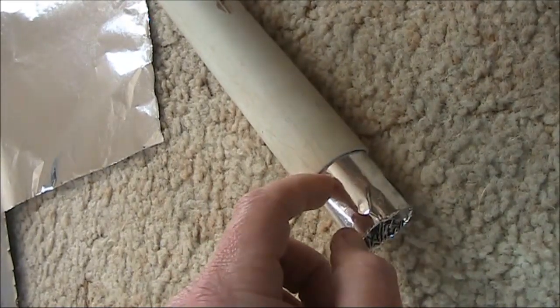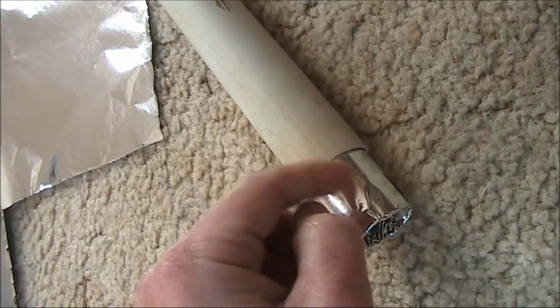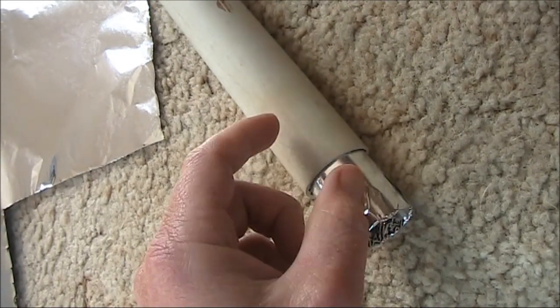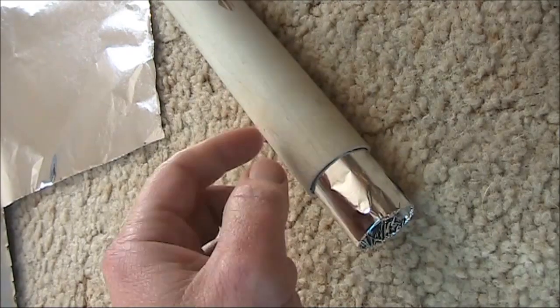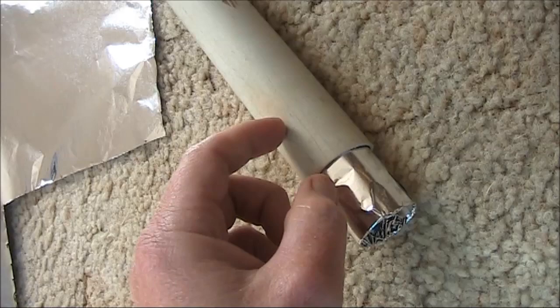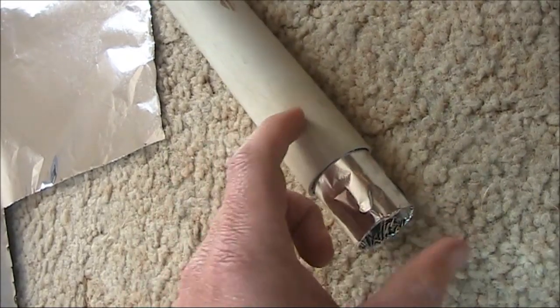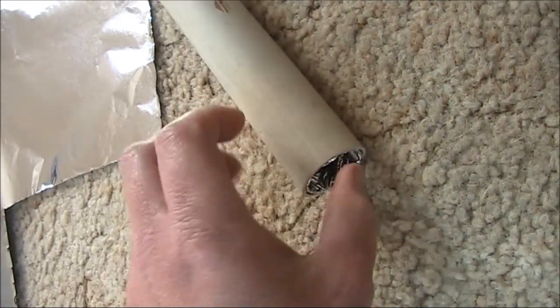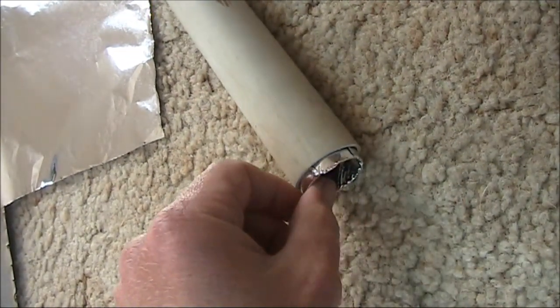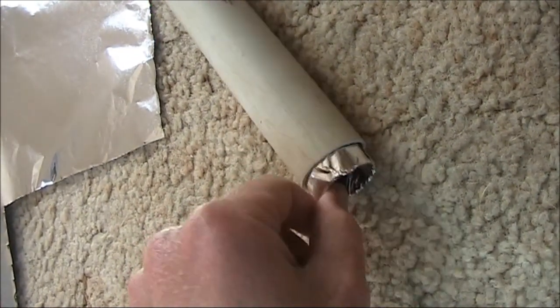Now, you want the diameters of the two to be fairly close to one another, maybe only three or four millimetres difference, because the closer they are together, the higher maximum capacitance you'll get. But you don't want them to be so close that it's a sticky fit, especially with the foil on.